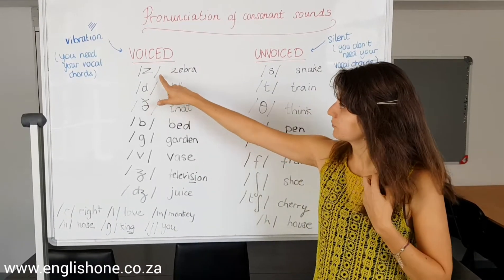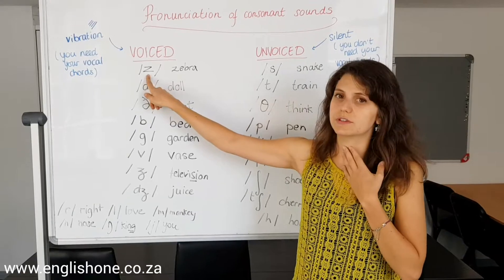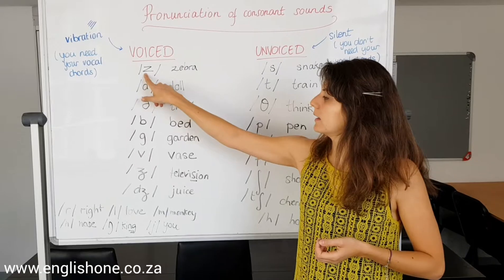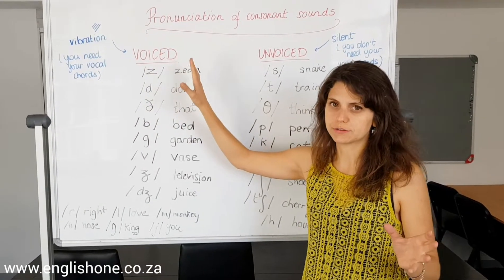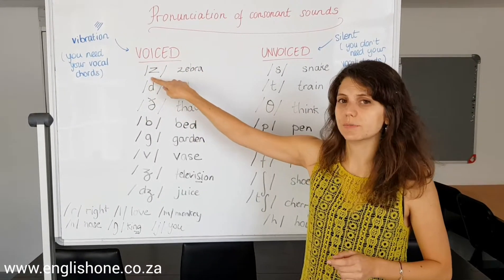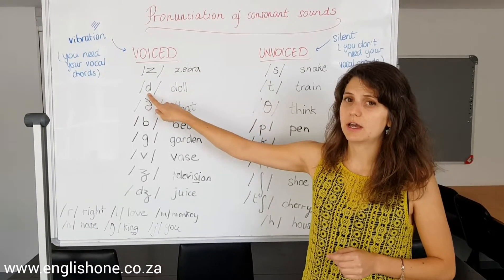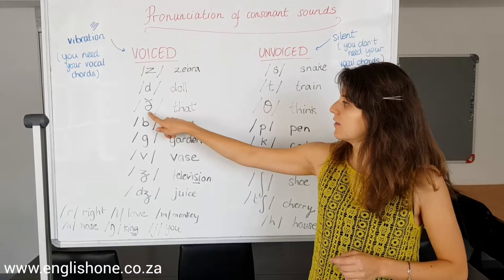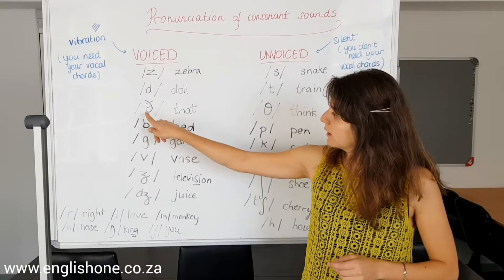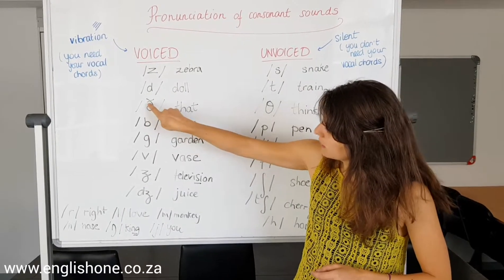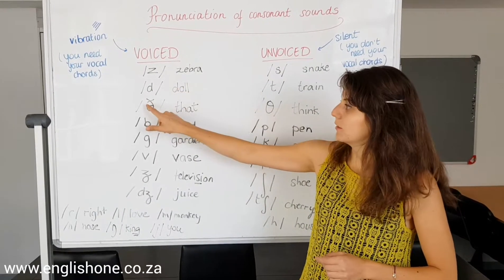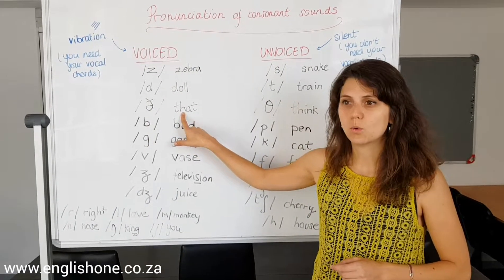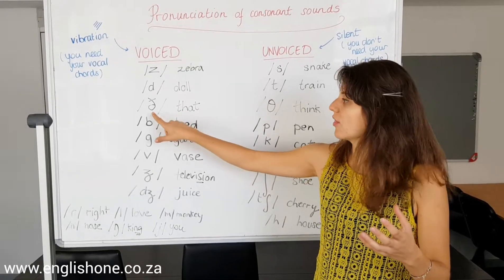So looking at them, this is the Z, like zebra. It looks like a Z. Most of them look like normal consonants. So that's the Z. This one is the D, as you can find it in 'doll.' And then this one is a little special — it looks a bit like a D, but with a little mark on it. That's the 'th' sound, as in 'that' or 'mother,' 'brother,' 'the.'